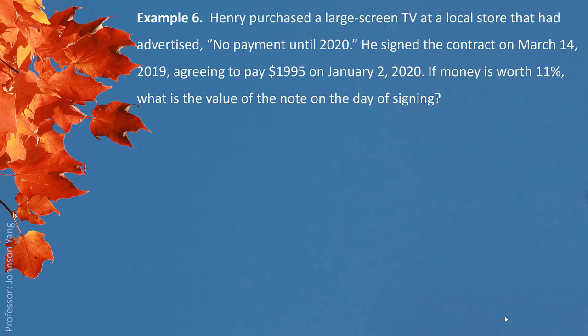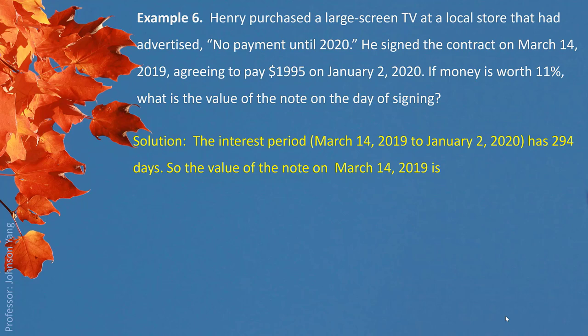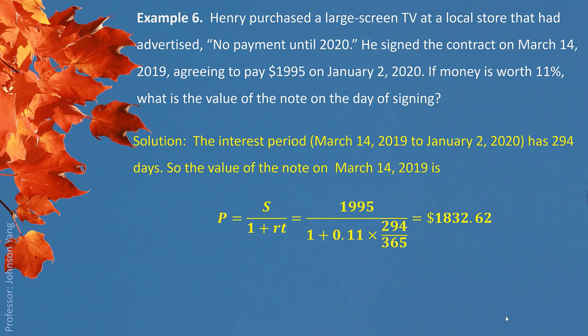Example 6: Henry purchased a large screen TV with no payment until 2020. He signed a contract on March 14, 2019, agreeing to pay $1,995 on January 2, 2020. If money is worth 11%, what is the value of the note on the day of signing? The interest period from March 14, 2019 to January 2, 2020 is 294 days. Using the present value formula gives $1,832.62 as the value of the note on March 14, 2019.